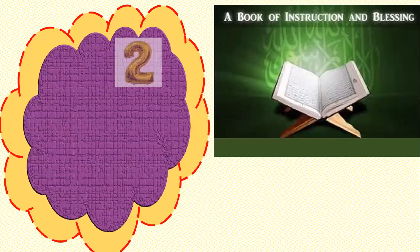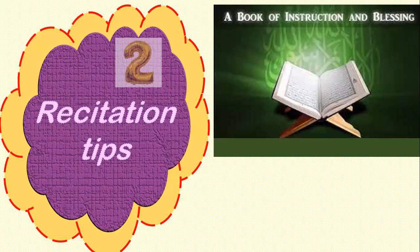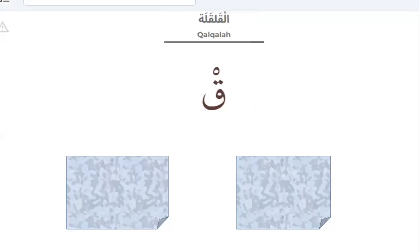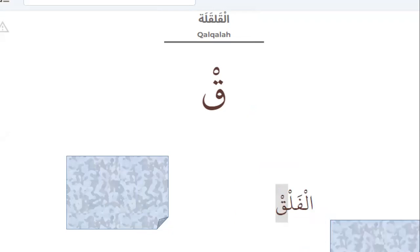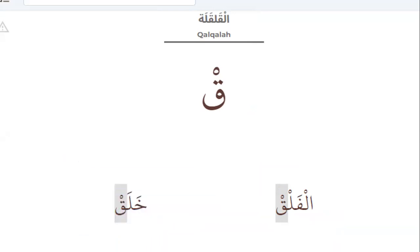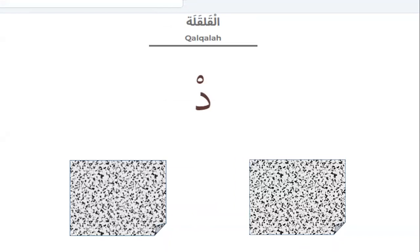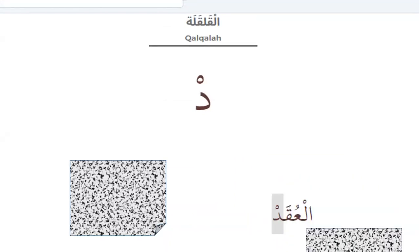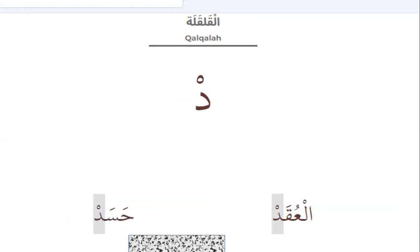Now let's go to the second part of our class today to study together the Tajweed rules in Surah Al-Falaq — the recitation tips. Number one: Qalqala. Qalqala means vibration. The letters are Qad Ba Jad. Letter Qaf — when Qaf has sukoon it will have a bounce sound. Example: Al-falaq. Please repeat: Al-falaq. Another letter: Al-uqad.